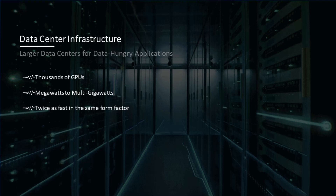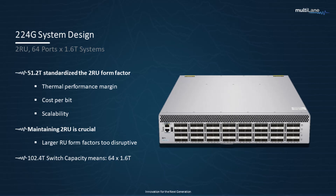Next-gen data centers will require thousands of GPUs. Megawatts are turning not only to gigawatts, but multi-gigawatts. And all this has to move twice as fast while maintaining the same form factor. For us to bring this new infrastructure, we will move to 102.4T switches. Hyperscalers have already standardized the 2RU form factor because it was found that 2RU was the sweet spot for optimizing thermal performance, cost, and scalability.